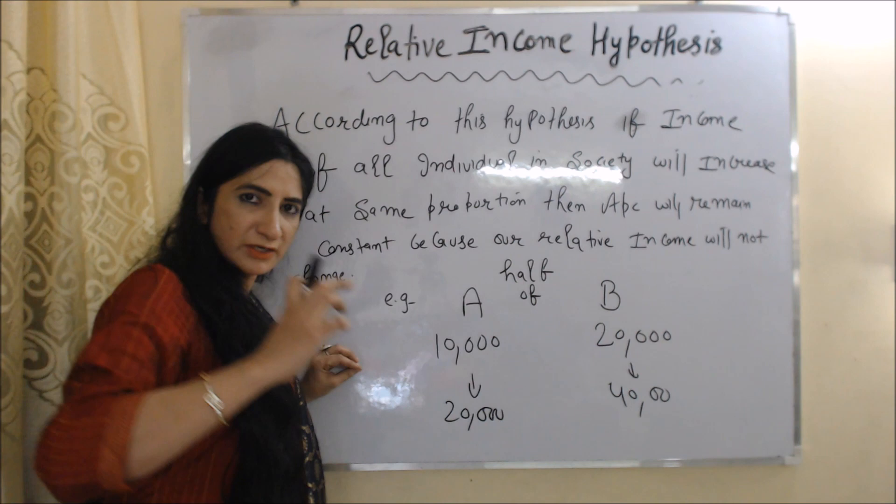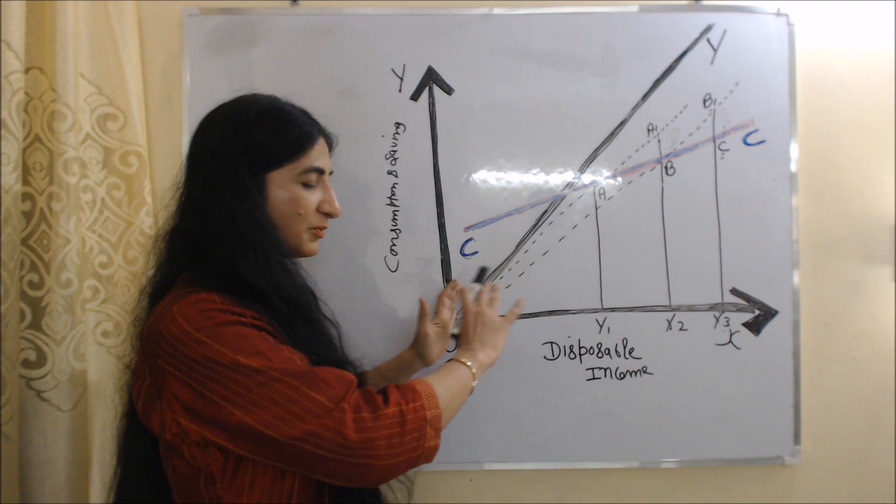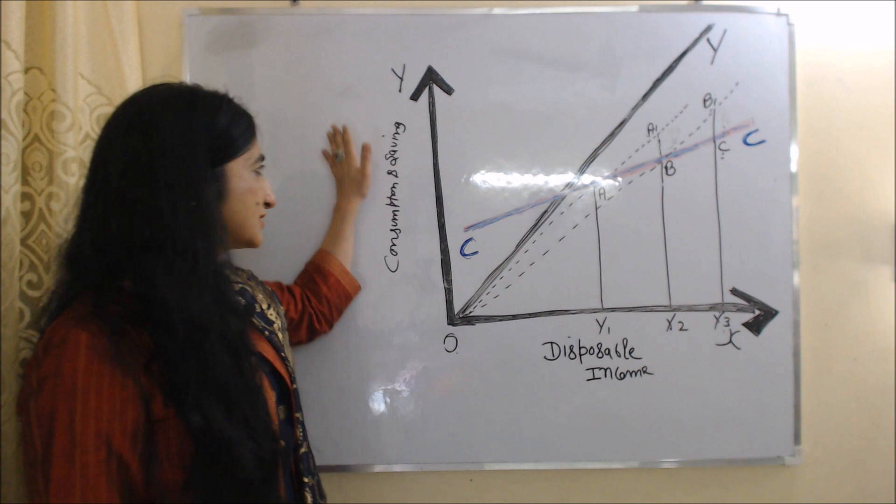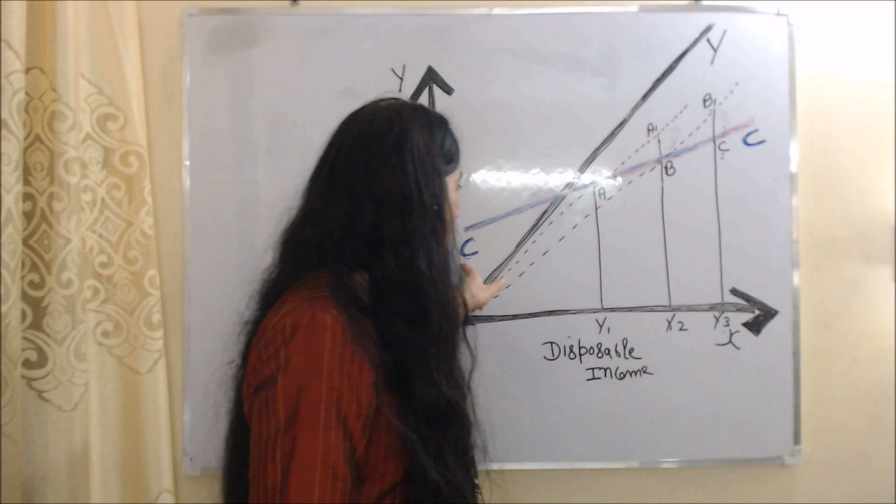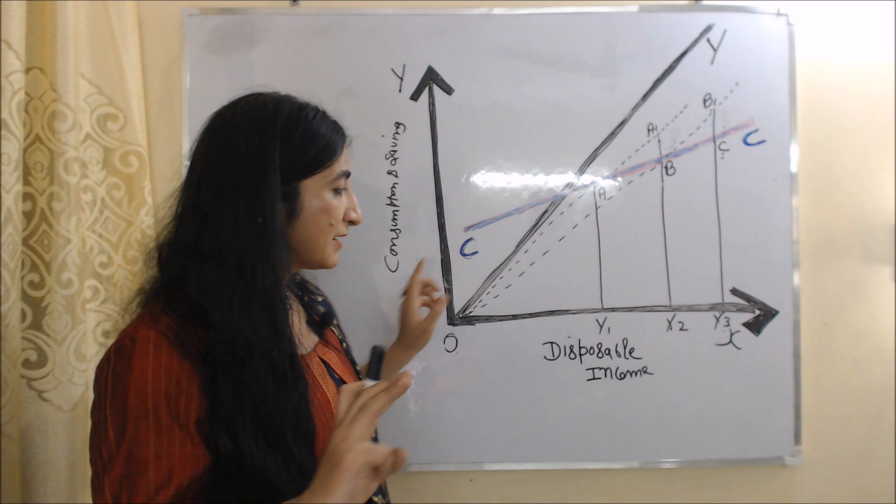Now we understand the relative income hypothesis with the help of this diagram. On the x-axis we have disposable income, and on the y-axis we have consumption and saving. OY is our income line, and CC is our short-run consumption function. Here we have two persons, person A and person B.